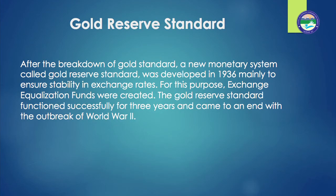Gold reserve standard: after the breakdown of the gold standard, a new monetary system called the gold reserve standard was developed in 1936, mainly to ensure stability in exchange rates. In 1936, Great Britain, the USA, and France entered into a tripartite monetary agreement according to which the free flow of gold or foreign currency was allowed to stabilize exchange rates and promote foreign trade without affecting the internal value of the domestic currency. For this purpose, exchange equalization funds were created.